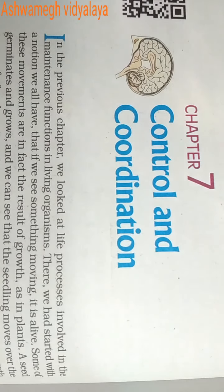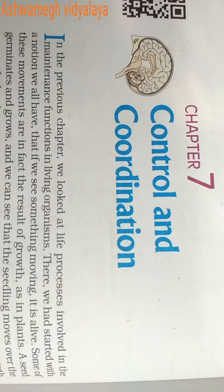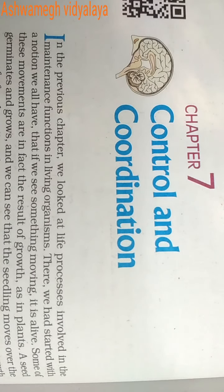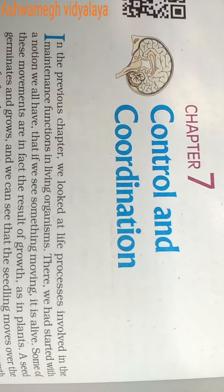In the last chapter we discussed which living things show movement. If we talk about plant growth, plants grow and move in a certain direction. And if we talk about animals, how they grow and then move.